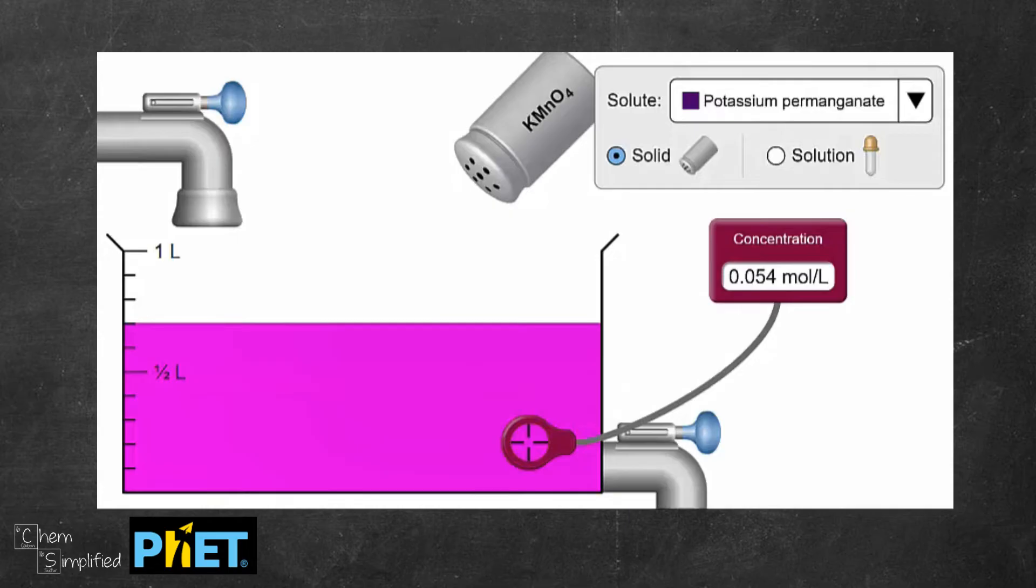So that means the amount of potassium permanganate, meaning the moles of potassium permanganate, before and after the dilution remain the same.